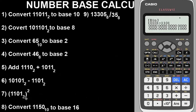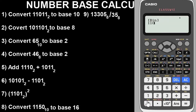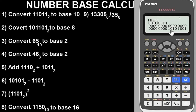Question seven asks us to find the product of 1101 base two raised to the power of two — meaning we multiply that value two times. To do this, input 1 1 0 1, then press multiply, then input 1 1 0 1 again, and press equals. If it were raised to power three you would do it three times, but this is squared, so we do it two times. The result is 10101001 base two.